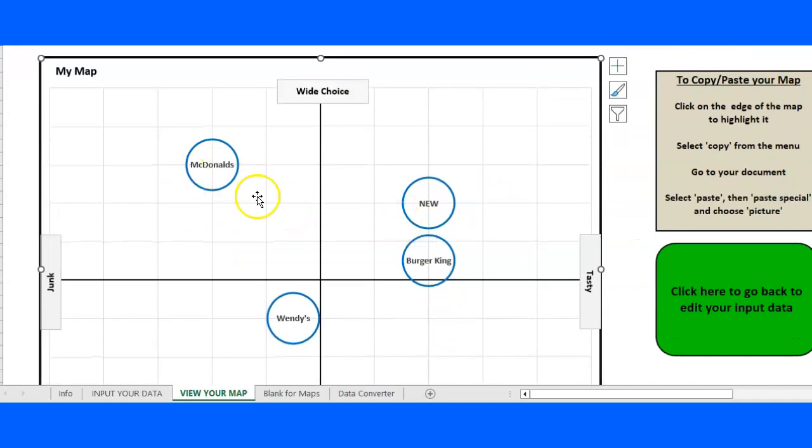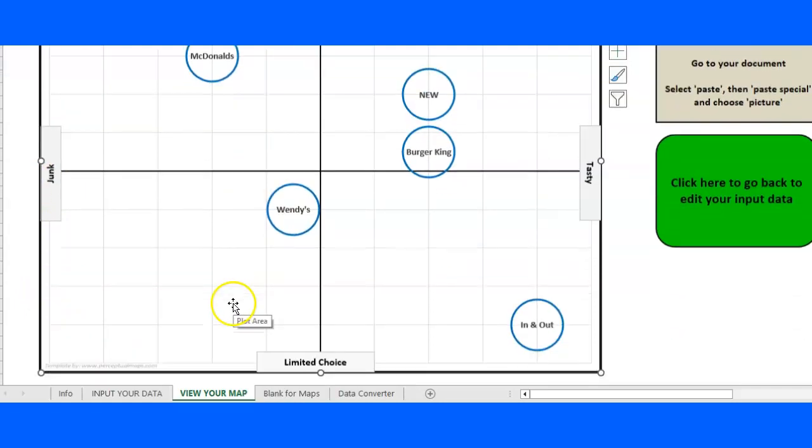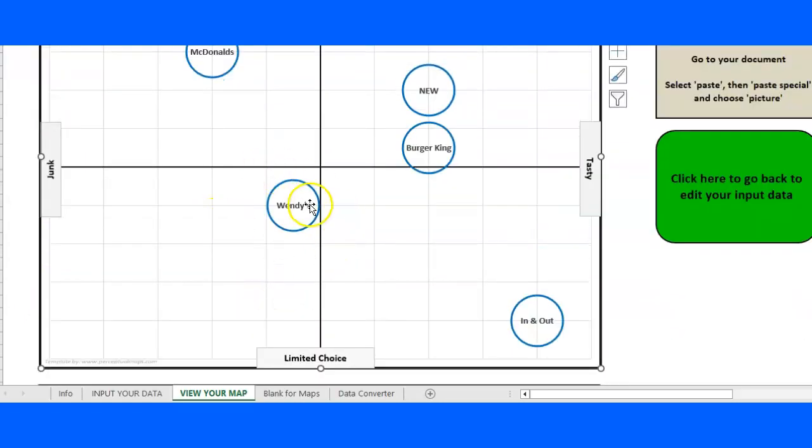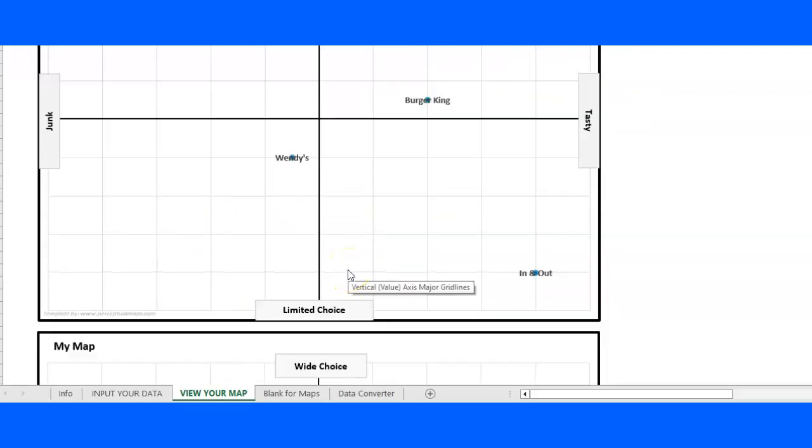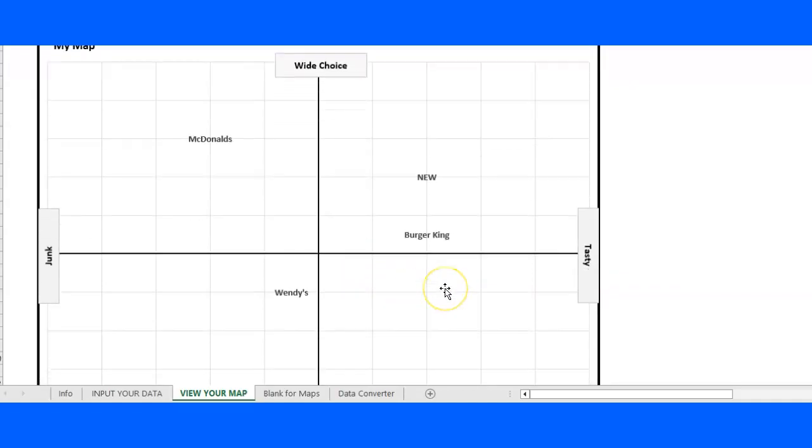It presents like that. I've changed the title—I've changed that all in the input area. Three versions: one I've got large circles, second one I've just got dots, so this may be more helpful if you have lots of brands, and then finally no dots at all, just the names.